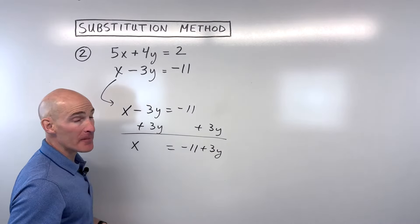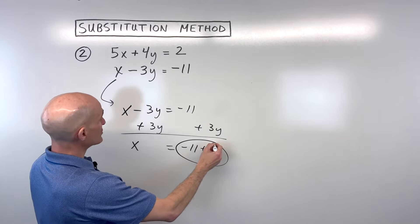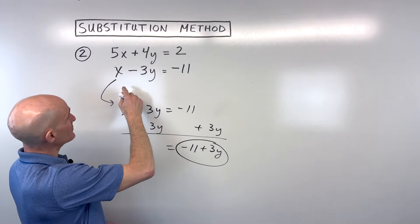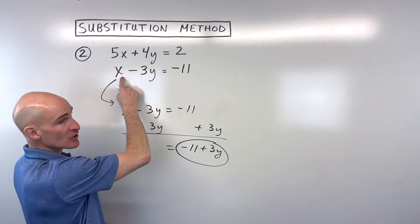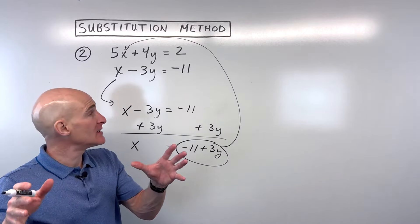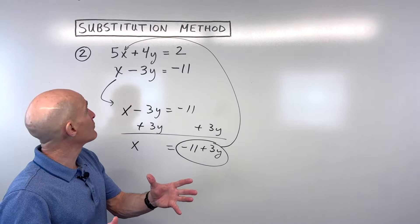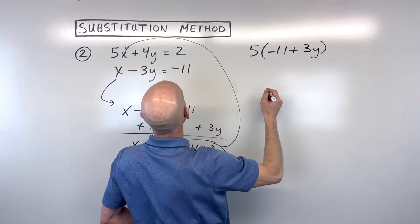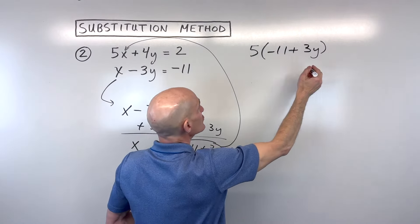So now that we know that x is equal to this quantity, let's take this and do our substitution. Now, again, don't make the mistake of substituting into this equation. That's the one that we just rearranged. You're going to want to take this and substitute it into the equation that we haven't used yet. And when you do a substitution, it's a good idea to put it in parentheses and treat it like a group. So what I mean by that is, 5 times x, since x is this whole quantity, negative 11 plus 3y, plus 4y equals 2.